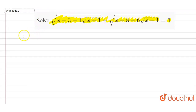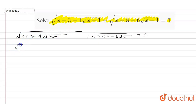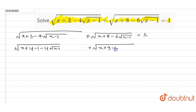For solving this, I first write here the complete question: √(x + 3 − 4√(x − 1)) + √(x + 8 − 6√(x − 1)) = 1. I can also write it as √(x + 4 − 1 − 4√(x − 1)) + √(x + 9 − 1 − 6√(x − 1)).